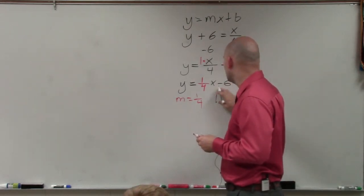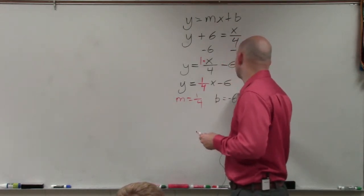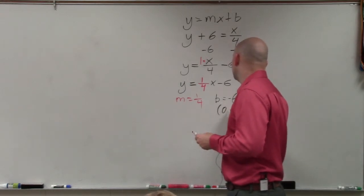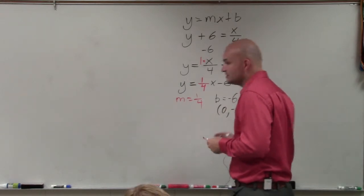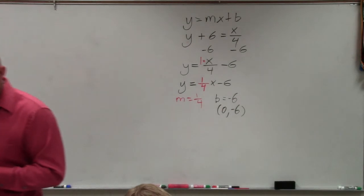So my b is equal to negative 6. Or I always like to write it as a coordinate point. Because remember, y-intercept is a coordinate point.